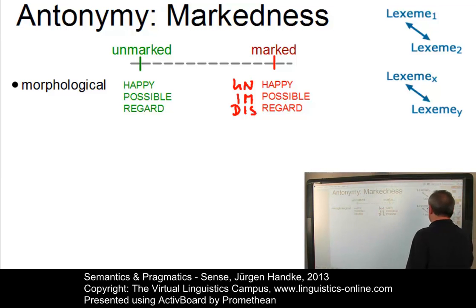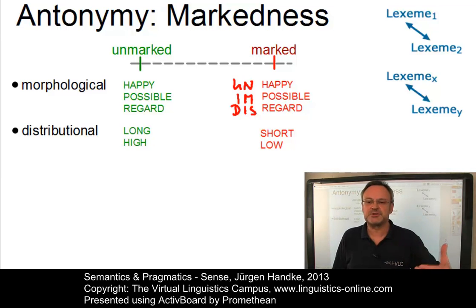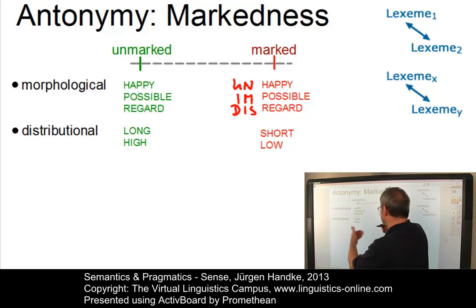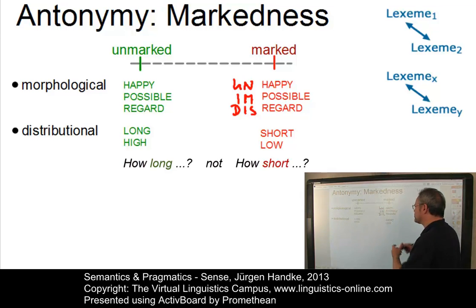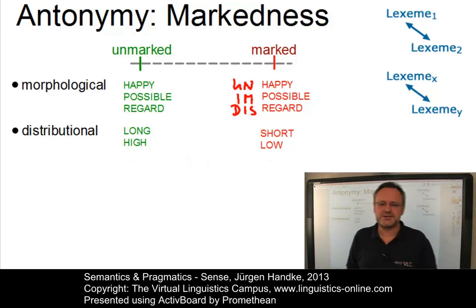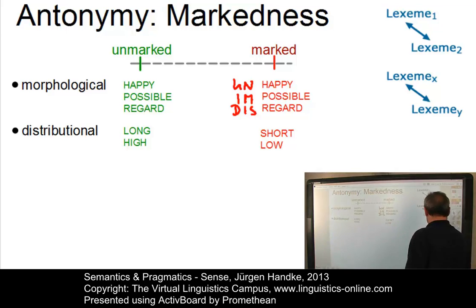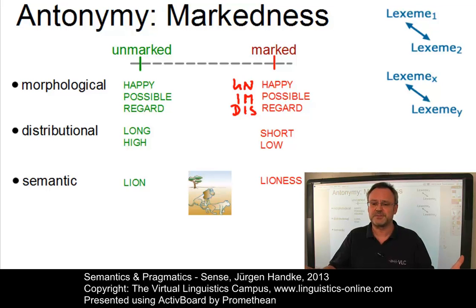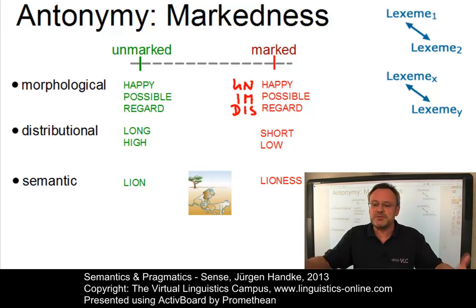A second type is distributional markedness. In sets of gradable antonyms such as long and short, or high and low, the unmarked term is the item that can be used in a wider variety of contexts, for example in questions or quality descriptions. A question would normally be phrased as how long is something or how high is something, but only very rarely how short is something or how low is it. Note that for some items, such as hot and cold, there is no such pattern. Semantic markedness is a distinction applying to pairs of opposites in contexts where the normal opposition is neutralized; the unmarked term is then used for both items and its meaning is what is common to the two terms of the opposition.